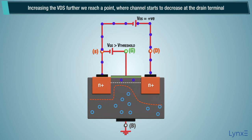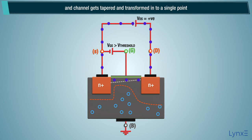Increasing the VDS further, we reach a point where channel starts to decrease at the drain terminal and channel gets tapered and transformed into a single point. After this, even we increase the VDS, drain current ID remains constant. After this point, MOSFET goes into a saturation mode.